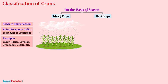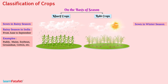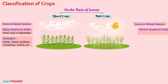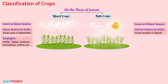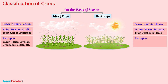Rabi crops: The crops which are sown in the winter season are called Rabi crops. In India, the winter season is from October to March. Some of the Rabi crops are wheat, gram, pea, mustard, and linseed.